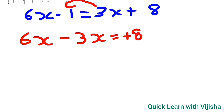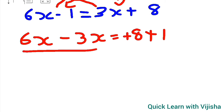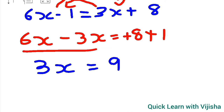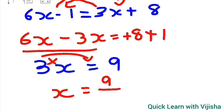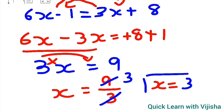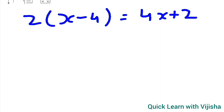The number 8 stays on the right, and minus 1 comes to the right side as plus 1. Solving: 6x minus 3x gives 3x, and 8 plus 1 gives 9. We need only the value for x — 3 is in multiplication form so it moves to division, giving x equals 9 upon 3, which is 3.